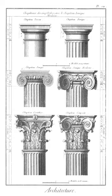Cuneus: a wedge-shaped division of the Roman theatre separated by the scalae or stairways. This shape also occurred in medieval architecture. Cupola: a small, most often dome-like, structure on top of a building.